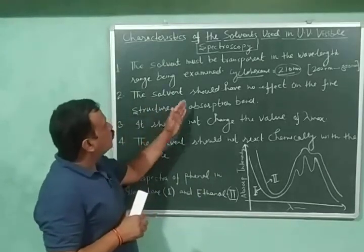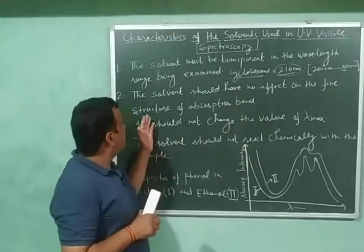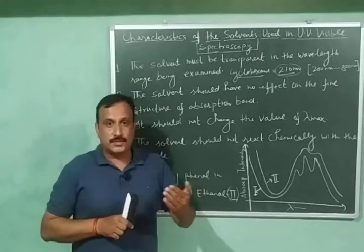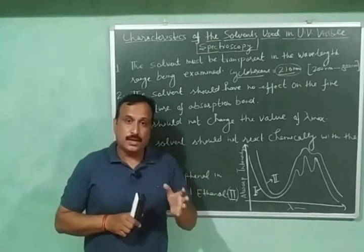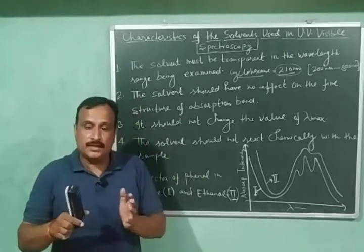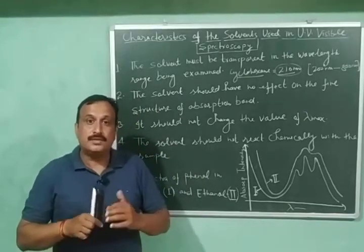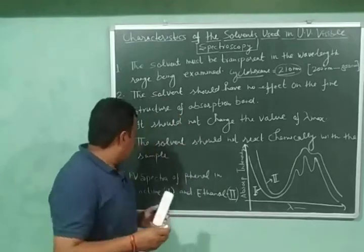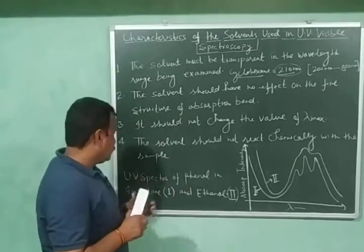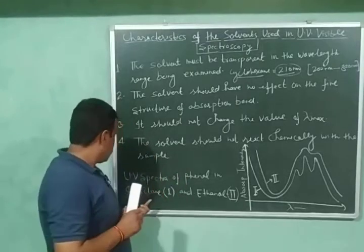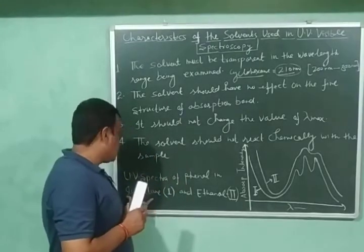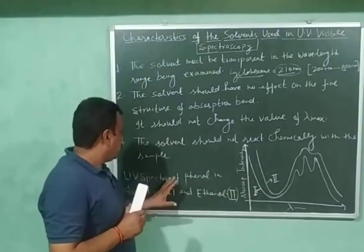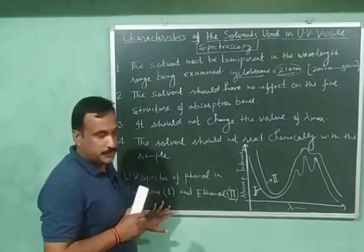Second one is the solvent should not have any effect on the fine structure of the absorption band. So let us explain this fine spectrum first. By fine spectrum, we mean that our spectrum should be well defined, it should have sharp peaks, which can be easily distinguished or identified. Here I have an example. So here the UV spectra of the phenol is recorded in two solvents. First solvent is isooctane. And this spectrum number one is the spectrum of phenol in isooctane solvent.